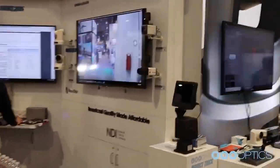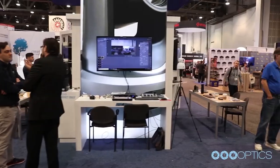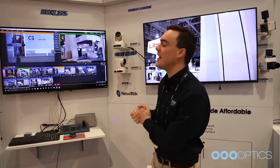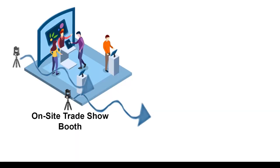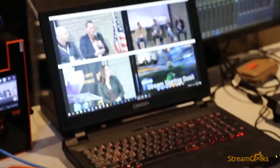For example, consider a trade show where a live stream is going on. A company can easily set up a few cameras on site at the trade show area, but they don't need to bring an entire video production system with them on site. Instead, they can send each video and audio stream from the trade show floor back to their video production studio for broadcasting out to the world.